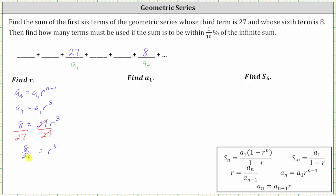To solve for r, we take the cube root of both sides — I'll raise both sides to the one-third power. The cube root of r cubed is r, and the cube root of eight twenty-sevenths is two-thirds.